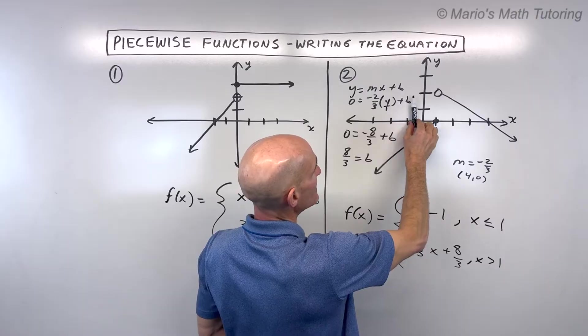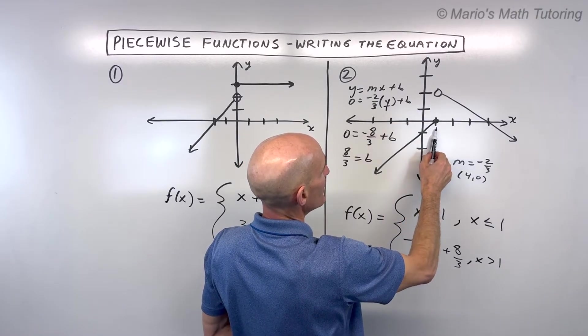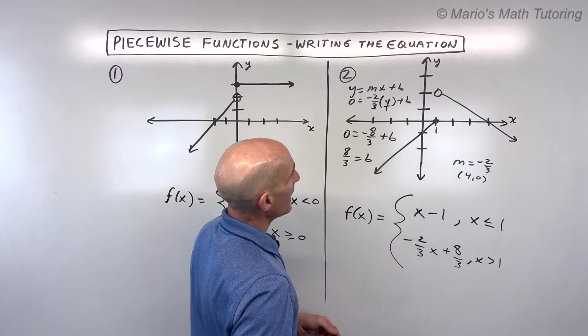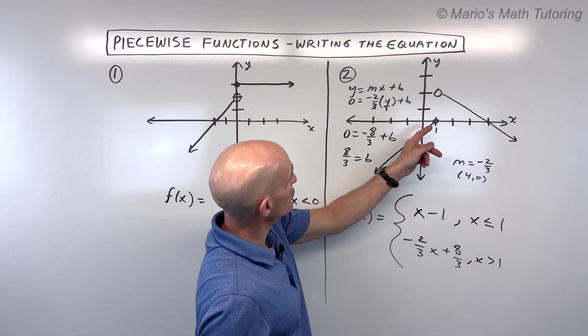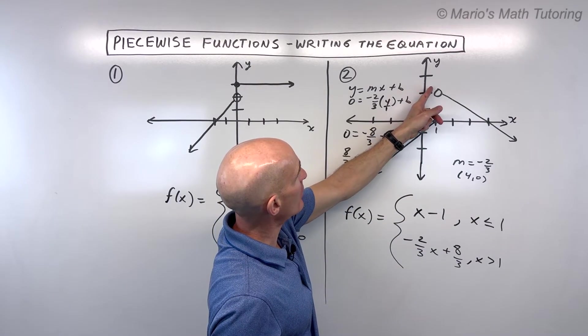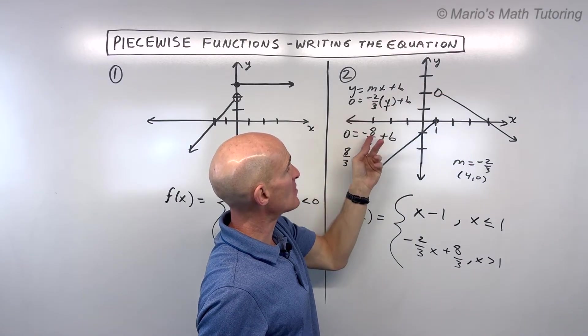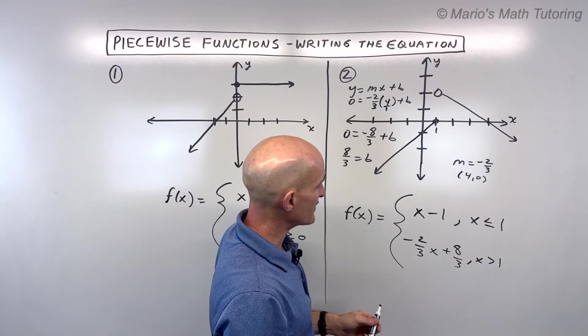Again, notice it passes the vertical line test. If we're given an x value, there's only one y value. This is closed here, this is open here. And again, 8/3 is like 2 and 2/3, so it's crossing right about there. It would be hard to estimate that just by visually looking at the graph, so that's why we did a little bit of algebra here on the side.